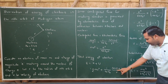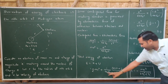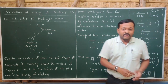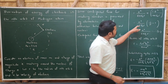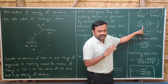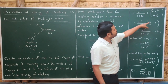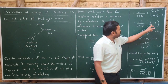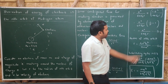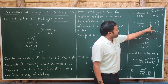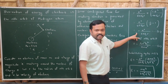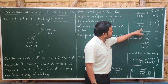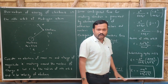The potential energy is -e²/(4πε₀r). Taking e²/(4πε₀r) as common from both kinetic and potential energy terms, what remains is ½ minus 1, which equals -½. So the total energy simplifies to E = -e²/(8πε₀r). This is equation number one — the expression for total energy of the electron.